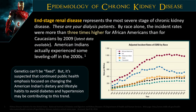In end-stage renal disease, African Americans have about three times the chance of developing chronic renal failure compared to Caucasians. In 2009, the Native American population actually saw some leveling off in rates, and researchers think that's due to better control and preventive medicine for hypertension and diabetes — so it's kind of leveled off. But African Americans remain the highest-probability group for renal failure.